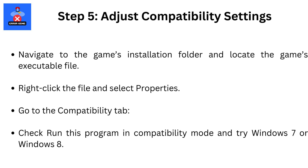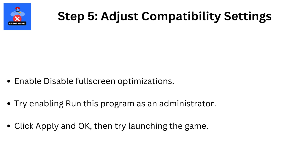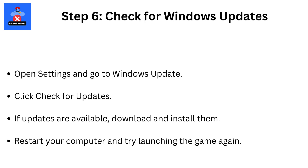Step 5: Adjust Compatibility Settings. Navigate to the game's installation folder and locate the game's executable file. Right-click the file and select Properties. Go to the Compatibility tab. Check Run this program in Compatibility mode and try Windows 7 or Windows 8. Enable or disable full-screen optimizations, and try enabling Run this program as an administrator. Click Apply and OK, then try launching the game.